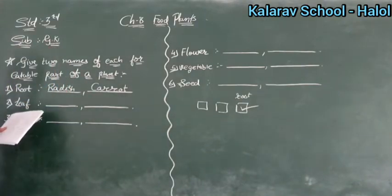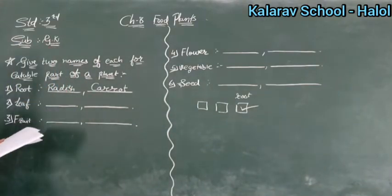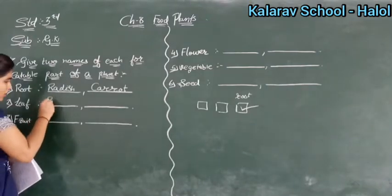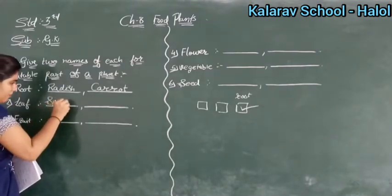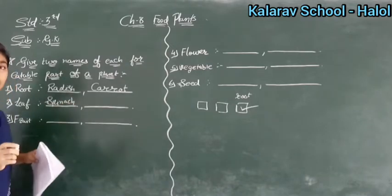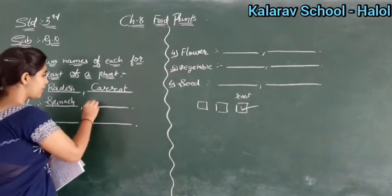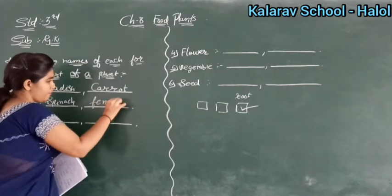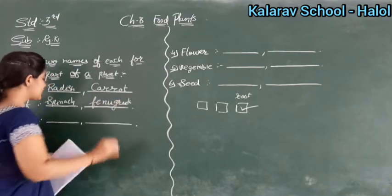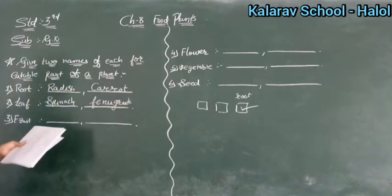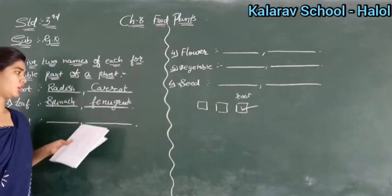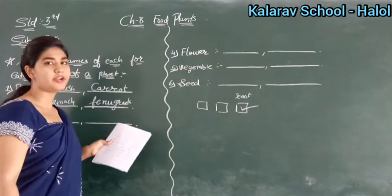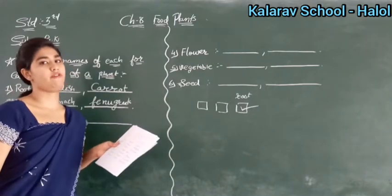Then it is leaf. Which plants do we eat the leaf of? It is spinach, and the second is fenugreek — we eat leaves of fenugreek too. What is the spelling of spinach? S-P-I-N-A-C-H. Spinach. Then it is fenugreek: F-E-N-U-G-R-E-E-K. Fenugreek.